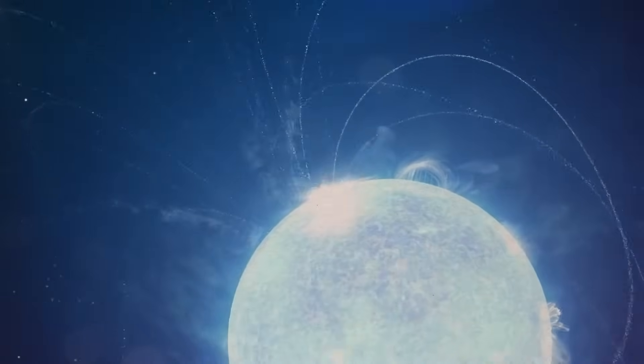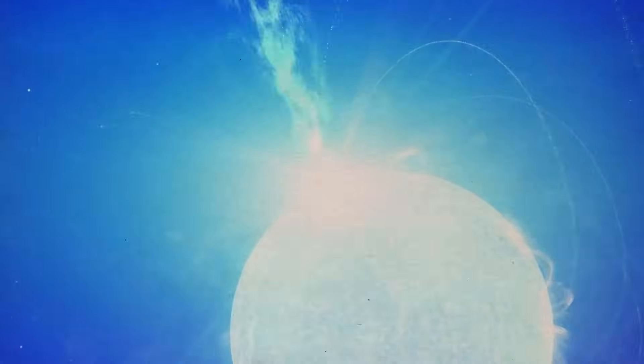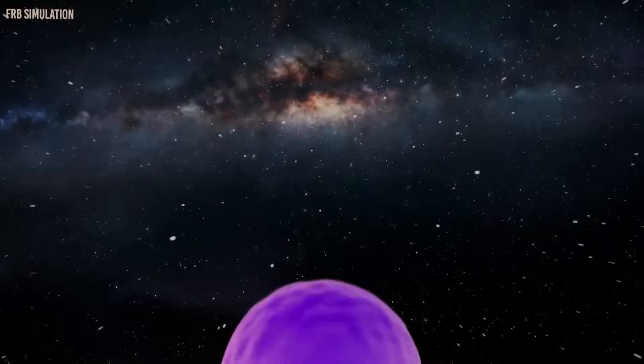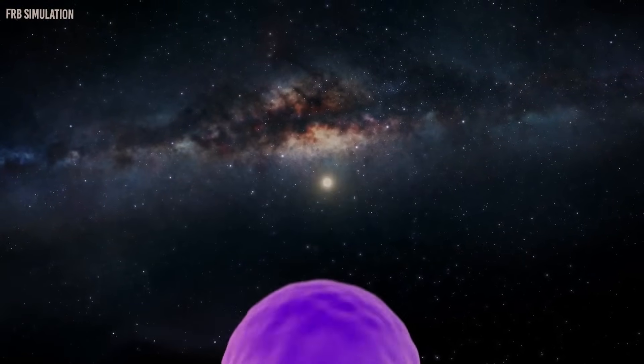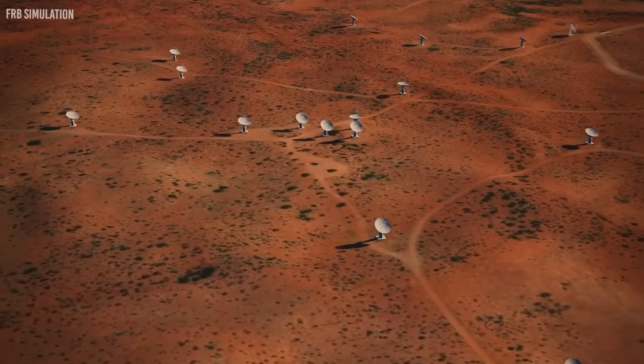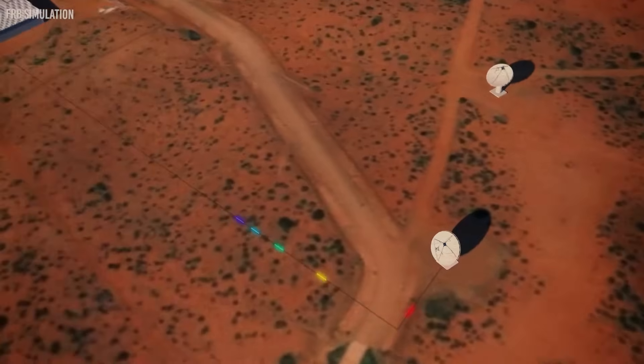An unexplained burst of radio waves that took 8 billion years to reach Earth has been discovered by astronomers. It's one of the most intense and far-off radio bursts ever seen. FRBs, or fast radio bursts, are short, powerful blasts of radio waves whose origins are still a mystery. Since the first FRB was found in 2007,